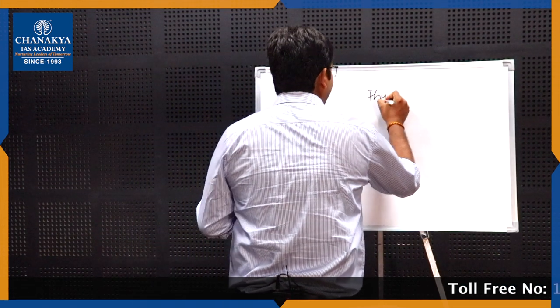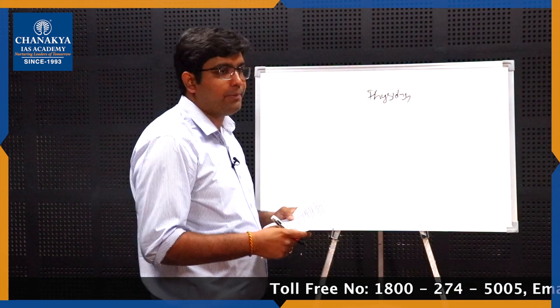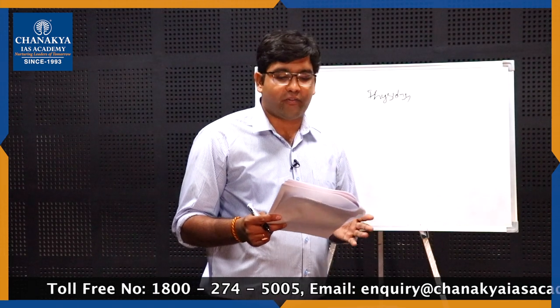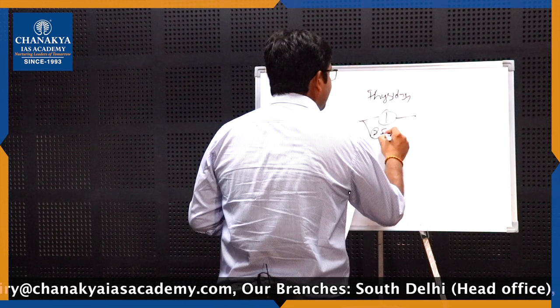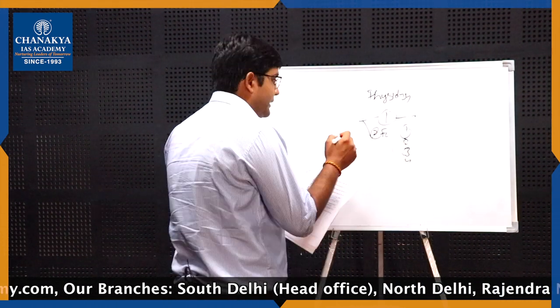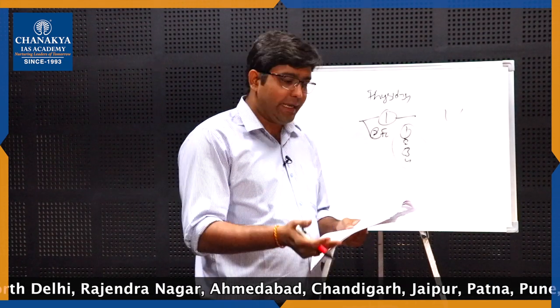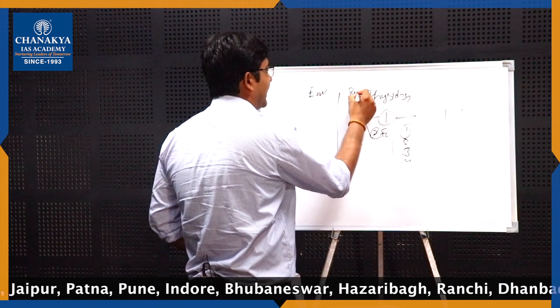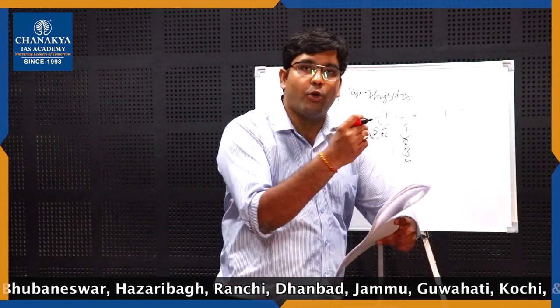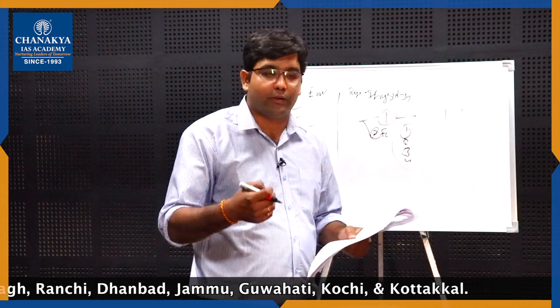Now we will move to the physiology section. This section is more time-demanding but also more scoring because there are absolute answers and you can simply write or draw diagrams to get good marks. For example, for the question: what are extrapyramidal tracts, describe their function, how do they differ from pyramidal tracts? Write point-wise, enumerate the extrapyramidal tracts, write their functions, and draw the diagram. For the difference between pyramidal and extrapyramidal tracts, just draw a table with three to four points of difference — do not go paragraph-wise.